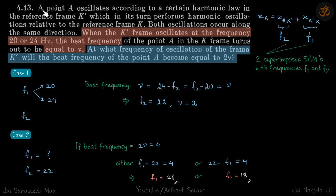Let's read: Point A oscillates according to a certain harmonic law in the reference frame K', which in turn performs harmonic oscillations relative to reference frame K. When the K' frame oscillates at frequency 20 or 24 Hz, we're talking about K' with respect to K, so f1 is either 20 or 24.